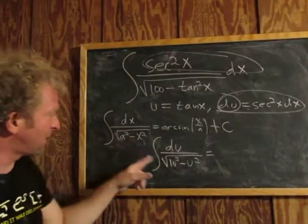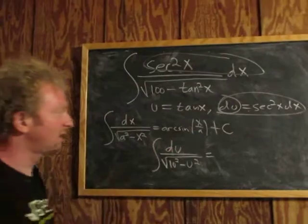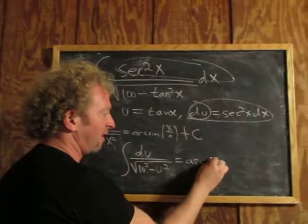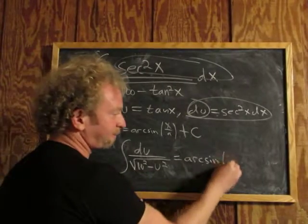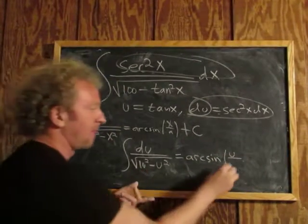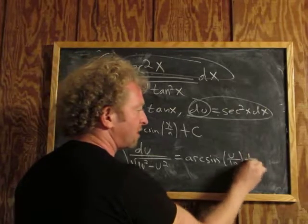And now you just use the formula. So it's going to be arc sine. Look at that, beautiful. Arc sine x. Well, that's u, so it's u over a. And a here was 10, right? So you get u over 10 plus c.